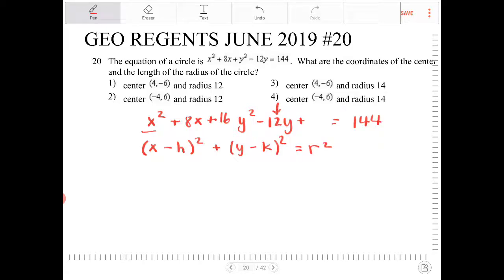We take this middle number here, 12, divide by 2, and that would be 6. Squared is 36.